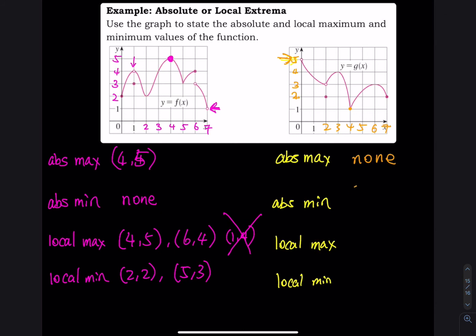For local max — top of the hill — we have 3 comma 4 and 6 comma 3. For local minimum — bottom of the hill — we have 4 comma 1. And that's it for this graph.